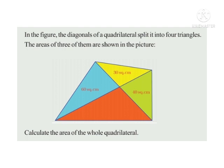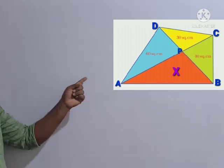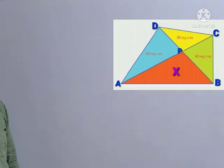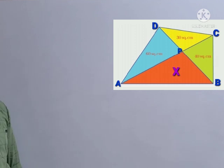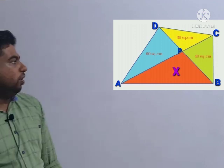In the figure, the diagonals of a cyclic quadrilateral split into four triangles. The areas of three of them are shown in the picture. Calculate the area of the whole cyclic quadrilateral. The figure ABCD is a cyclic quadrilateral, and AC and BD are diagonals. The diagonals AC and BD divide this quadrilateral into four triangles. You need to find the area of quadrilateral ABCD.